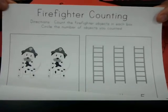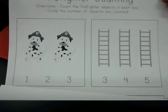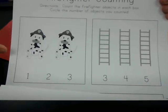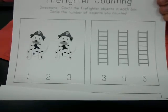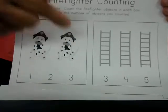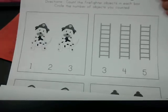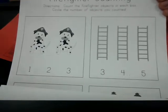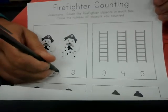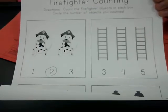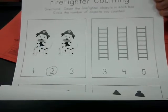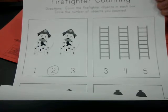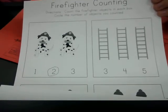Alright, so this says firefighter counting. There's our first little piece there. So we're going to look in this box and we're going to practice counting. One, two dogs. So then I take a pen or pencil or crayon and I'm going to circle the number two. Because there are two puppies there. Those are fire dogs. They are Dalmatians, and they can help firefighters.